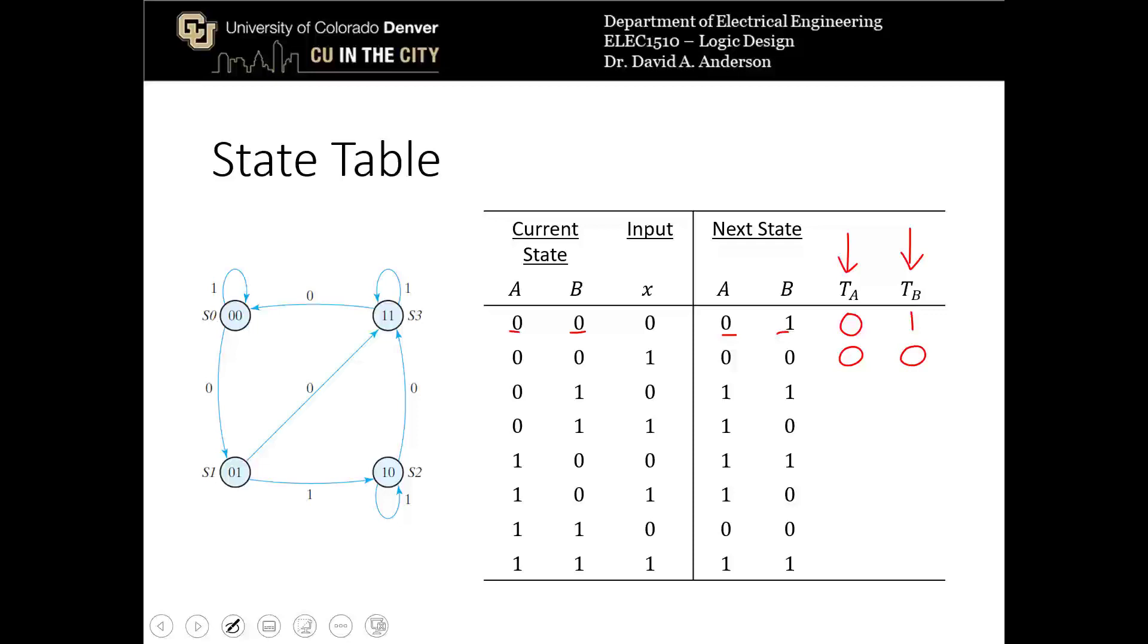In the third row, A goes from a 0 to a 1, that is a toggle. B goes from 1 to 1, that's not a toggle. Fourth row, A goes from 0 to 1, that is a toggle. B goes from 1 to 0, that is also a toggle. So by now you can probably recognize the pattern and I can just fill in the rest of the rows.